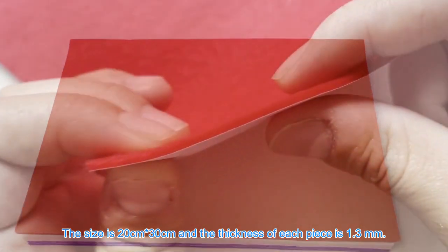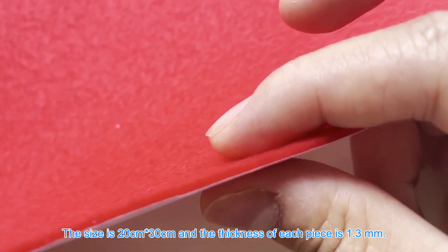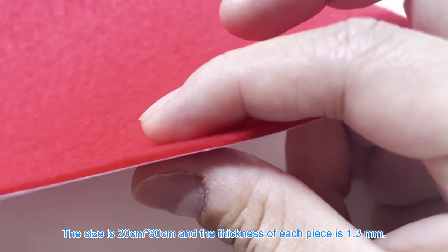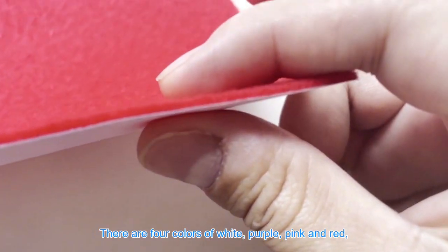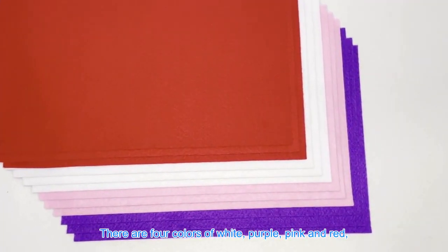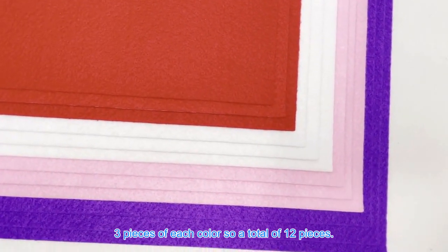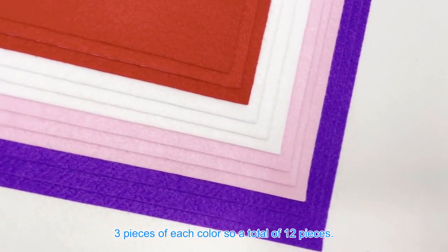The size is 20 centimeters by 30 centimeters, and the thickness of each piece is 1.3 millimeters. The colors are bright. There are four colors: white, purple, pink, and red, with three pieces of each color, so a total of 12 pieces.